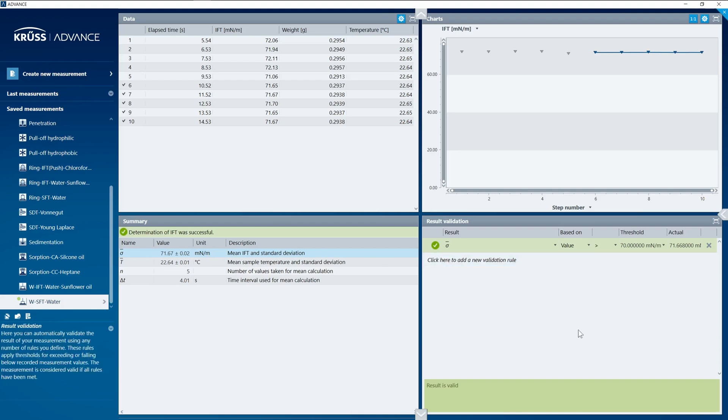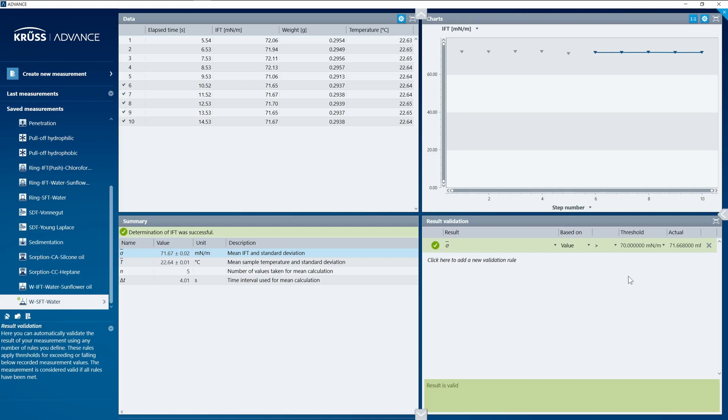And to the right here I've set up a validation step. Now normally surface tension of water should be about 72.8—in this case we were happy with 70. So we set a validation step of 70 or higher, and we can see it's lighting green because my surface tension was within that range.